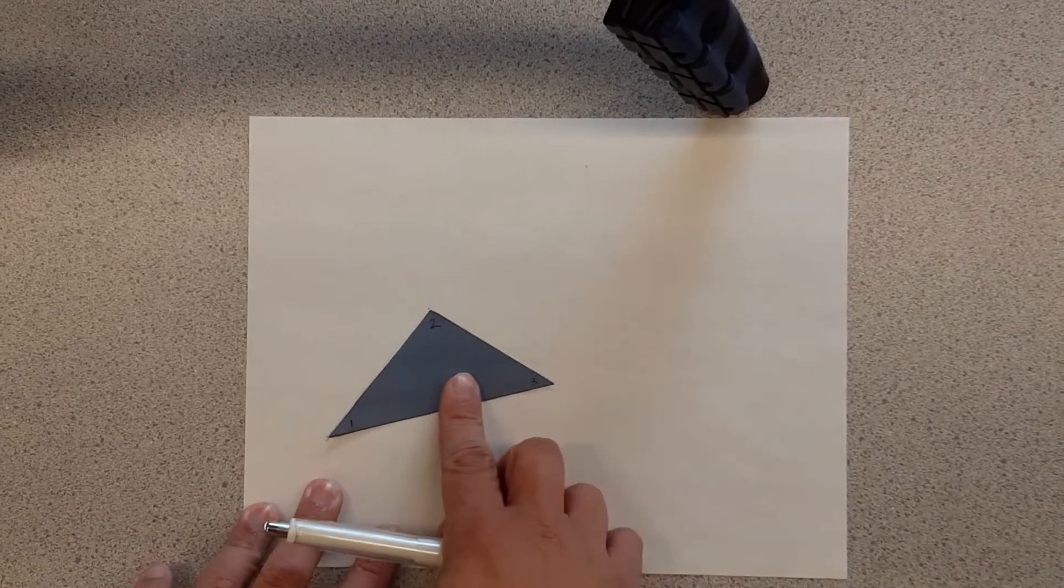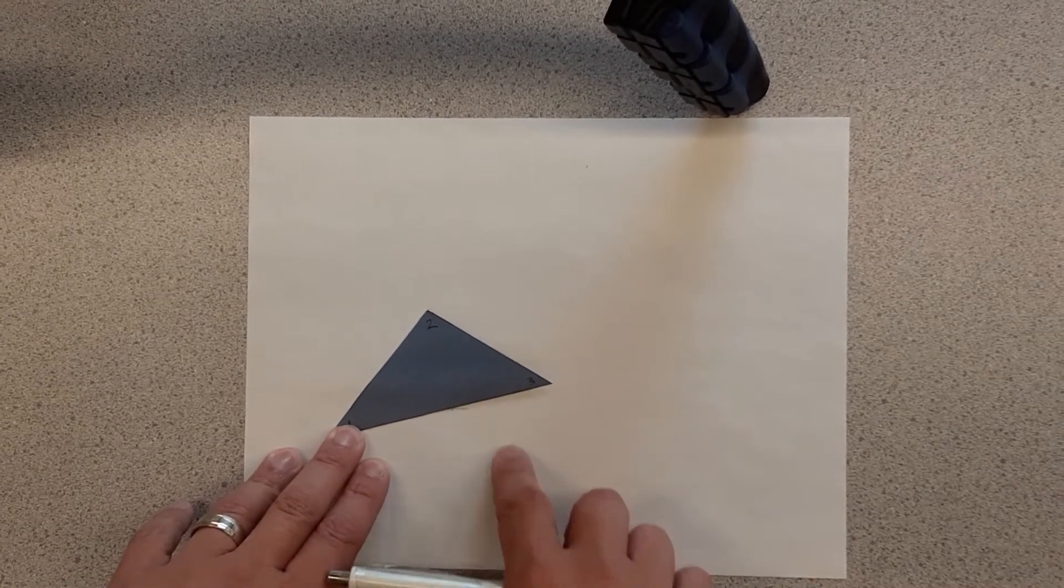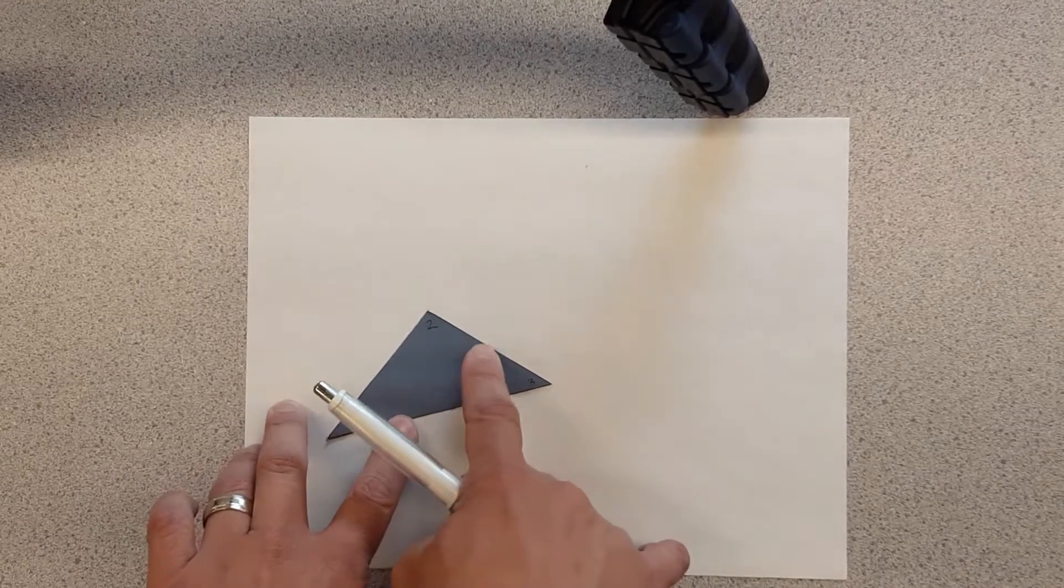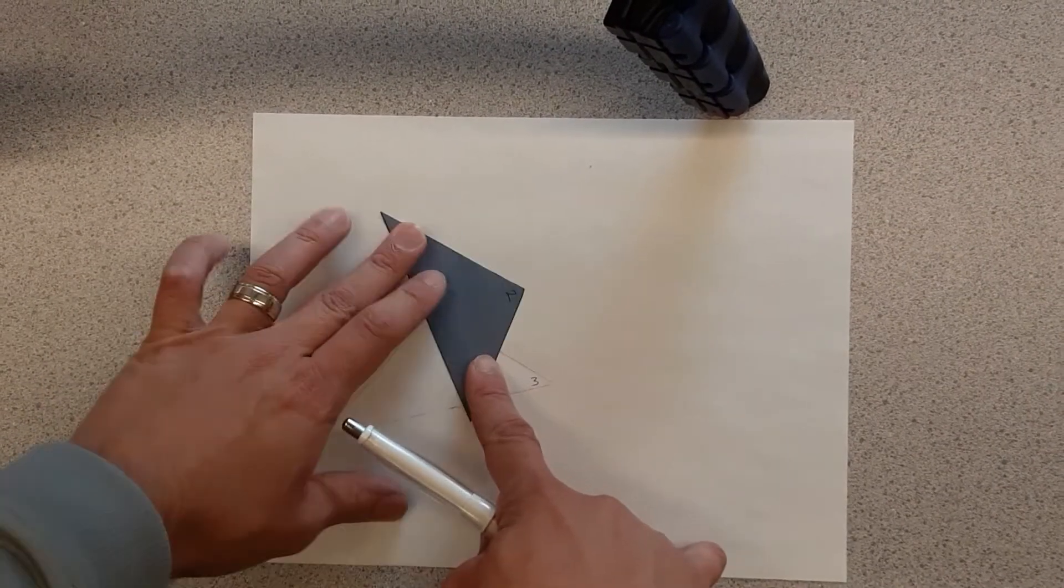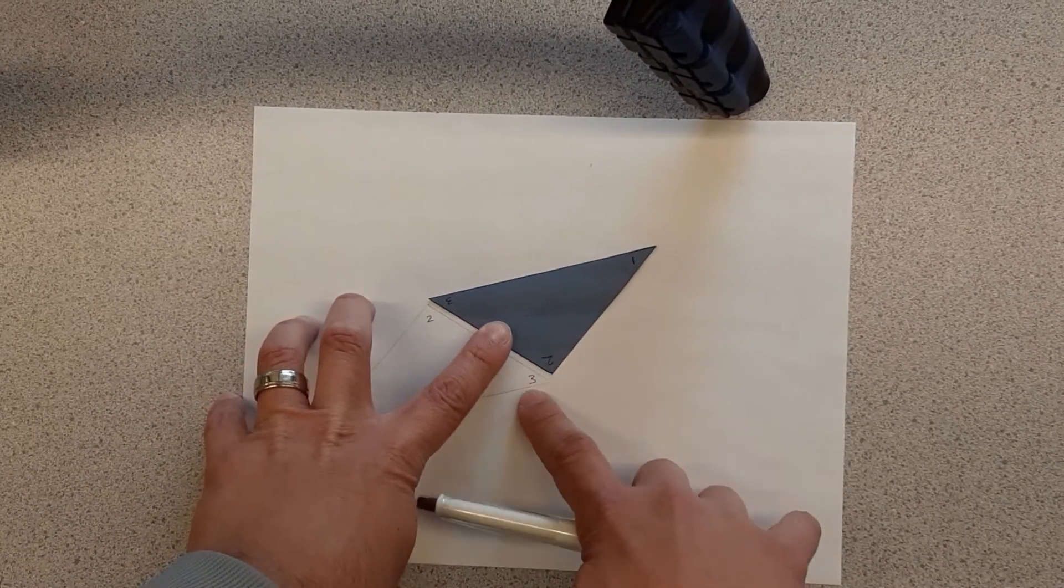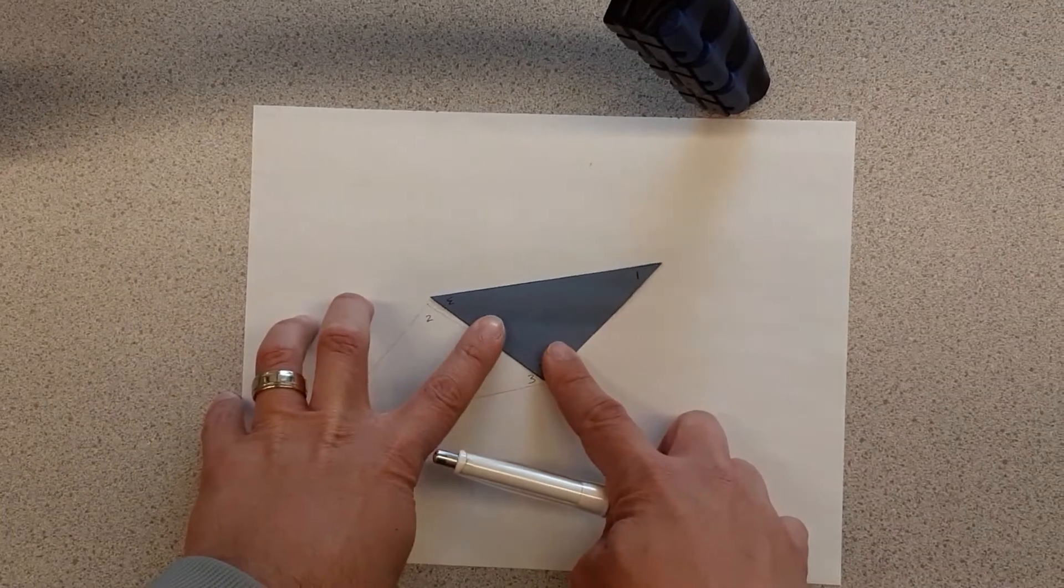So what I'm going to do is just like with quadrilaterals, I'm going to rotate this triangle. Now it doesn't matter which side I pick. How about I pick this two, three side? So I'm going to kind of go right in the middle and I'm going to spin it 180 degrees, perform that rotation so that now two and three are next to each other.